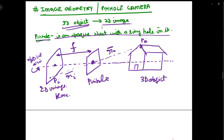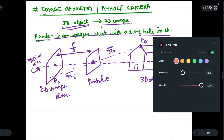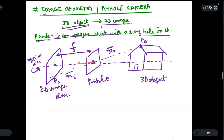Let us write the coordinate axes: this is the z-axis, this is the x-axis, and perpendicular to both of them is the y-axis. So now we have our pinhole camera, our 3D object, and our 2D image plane, and we have mapped a point of the object onto the image plane using the pinhole camera.